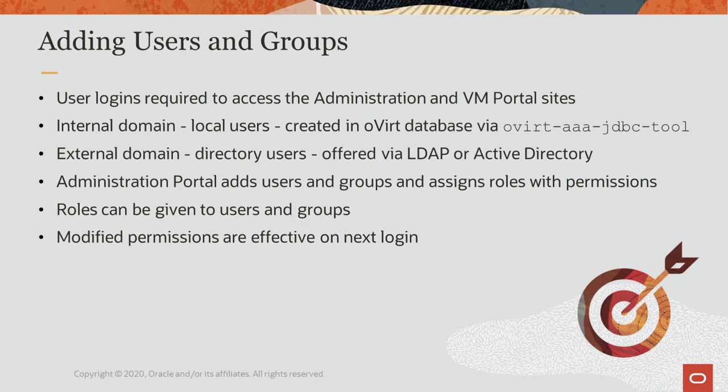Let's now look at working with users, groups, roles and permissions in the administration portal. For this demonstration, the users and groups have already been created with the command line utility. If you want to see how the users and groups are created from command line, you can find another training video in this Oracle Linux Virtualization Manager series showing how to work with the command line utility. Administering users' roles and permissions can be done from the administration portal, but adding new users must be done first from the command line interface. From our host running the oVirt engine, the ovirt-aaa-jdbc-tool command is used to add and manage the users and groups.